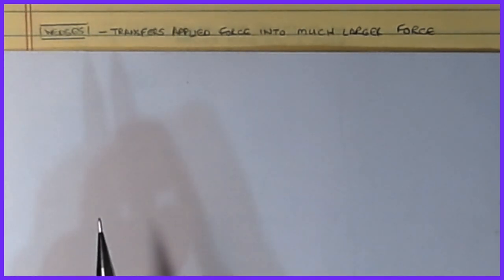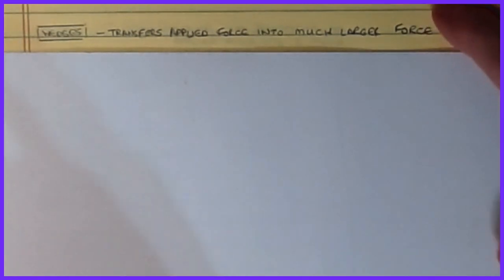Welcome to our next video. We're going to continue our discussion talking about friction, and in particular in this lesson we're going to be talking about specialty devices like wedges and friction on flat belts. Wedges are a mechanism used to transfer an applied force in one direction into a much larger force in another direction, usually through the use of a slope or inclined plane.